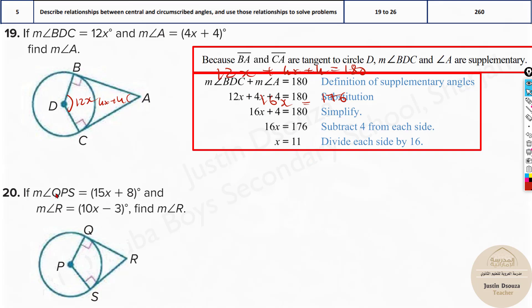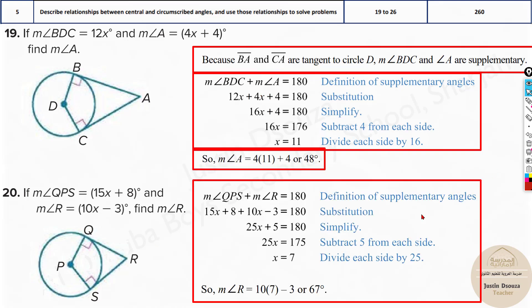Now what about this? The same thing, they have given you the angle P, that is 15x plus 8, and angle R is 10x minus 3. Add them up, and they will be equal to 180 degrees. Okay, I forgot to tell you, the measure of angle A is not found out. We just found out x. So x is 11. They have asked to find the measure of angle A. So put this 11 back over here. So it will be 4 times 11 plus 4. 44 plus 4 is 48.